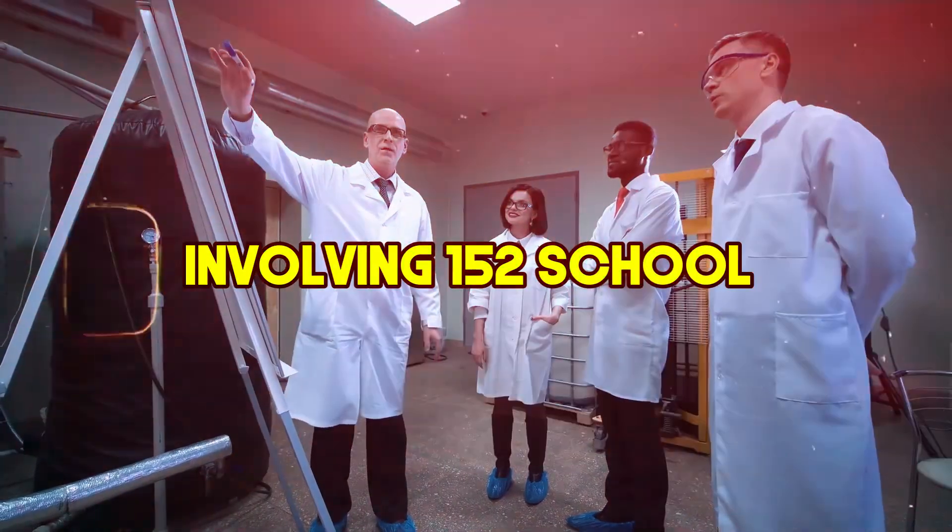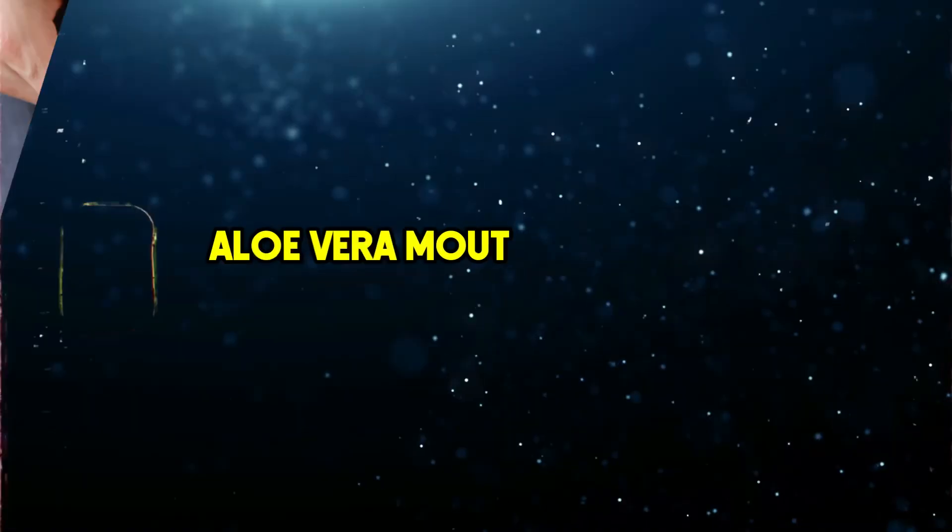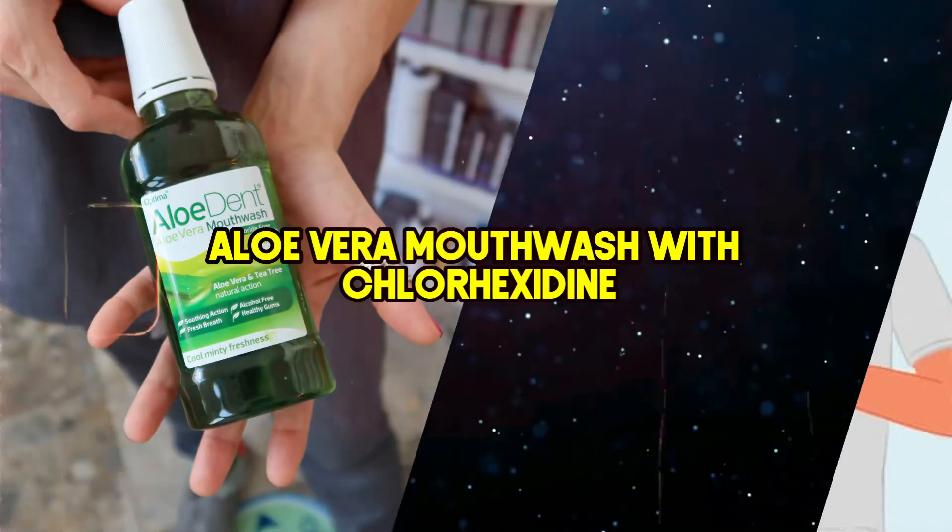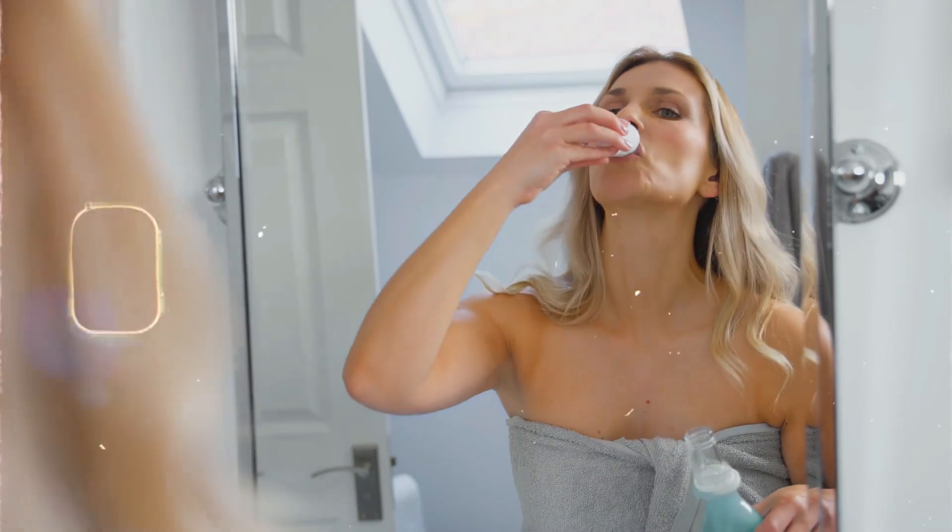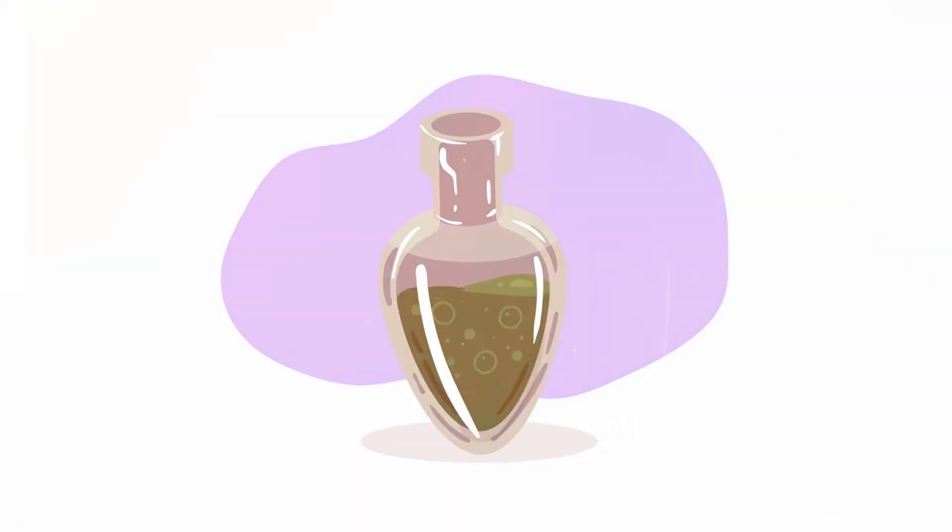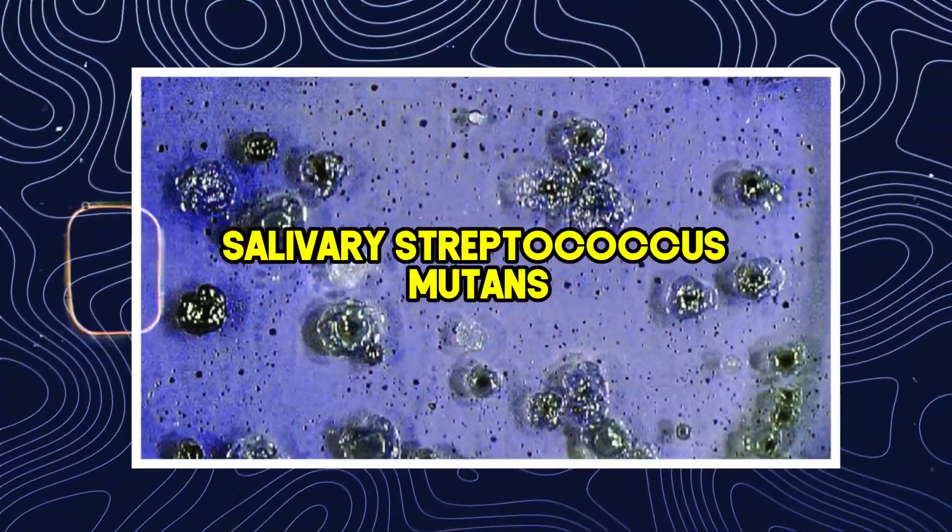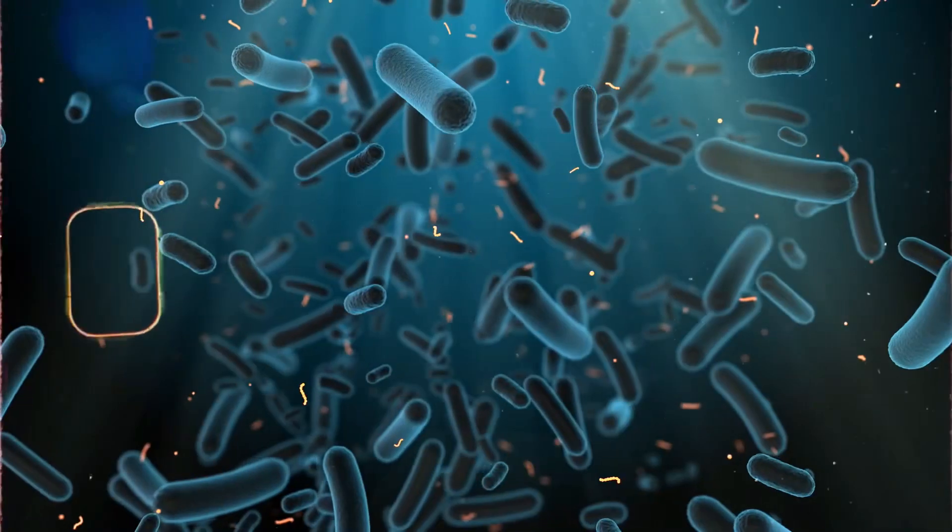In a study involving 152 school children aged 8 to 14 years, researchers compared an aloe vera mouthwash with chlorhexidine, a common ingredient in standard mouthwashes. After four weeks of use, the aloe vera mouth rinse significantly decreased plaque, gingivitis, and salivary streptococcus mutans, a bacterium responsible for plaque formation. Its effectiveness was found to be comparable to that of chlorhexidine.